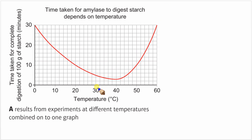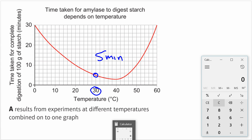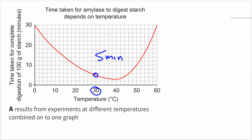Let's work this out. At 30 degrees Celsius, reading from the graph, it takes 5 minutes. So at 30 degrees, it takes 5 minutes for 100 grams of starch to be digested. Using a calculator: 100 grams divided by 5 equals 20. So the rate of reaction is 20 grams per minute.